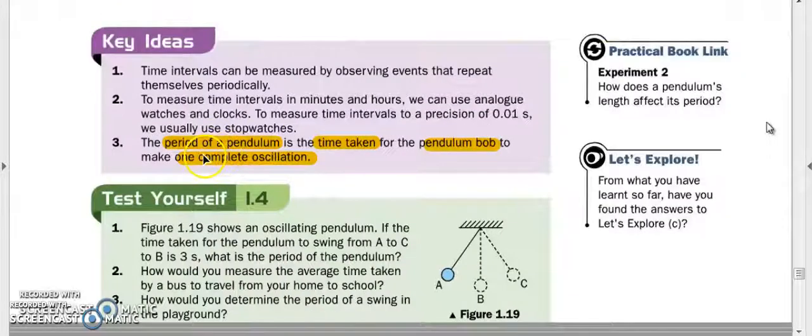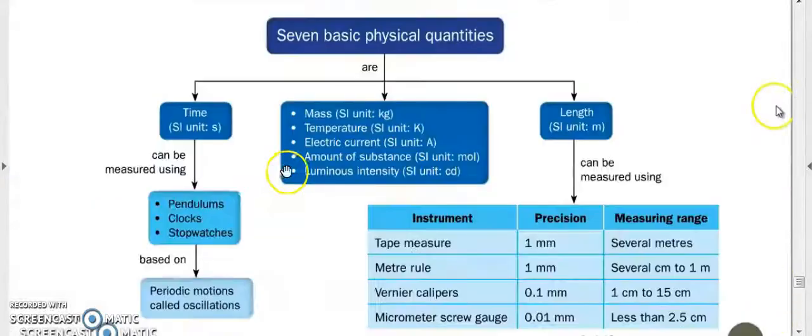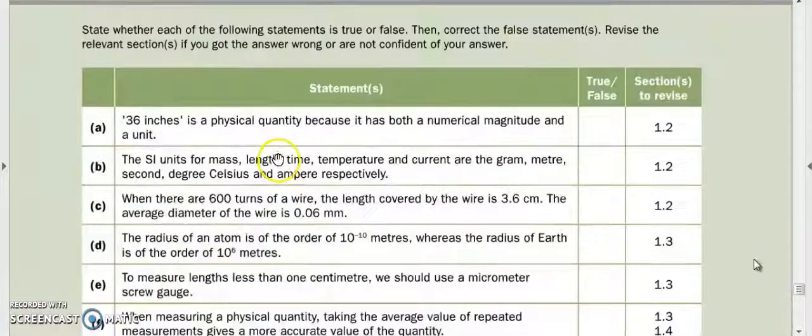Just to recap, the period of a pendulum is the time taken for the pendulum bob to make one complete oscillation. That's it for this video. Thanks for watching. See you guys again.